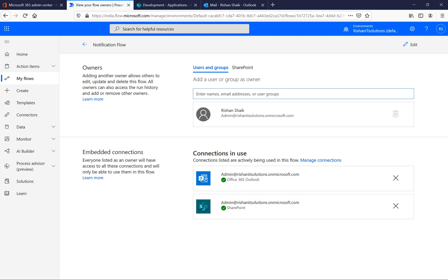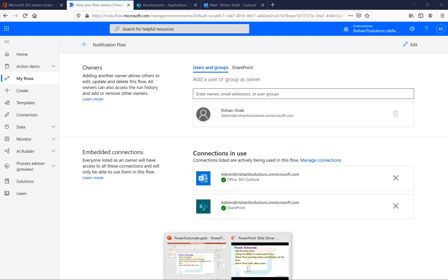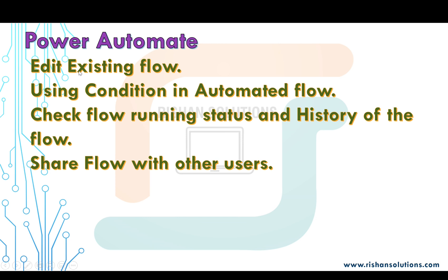That covers four different topics in Power Automate: editing an existing flow, using a condition in an automated flow, checking flow running status and history, and sharing flows with other users. In the next video we will discuss more actions.